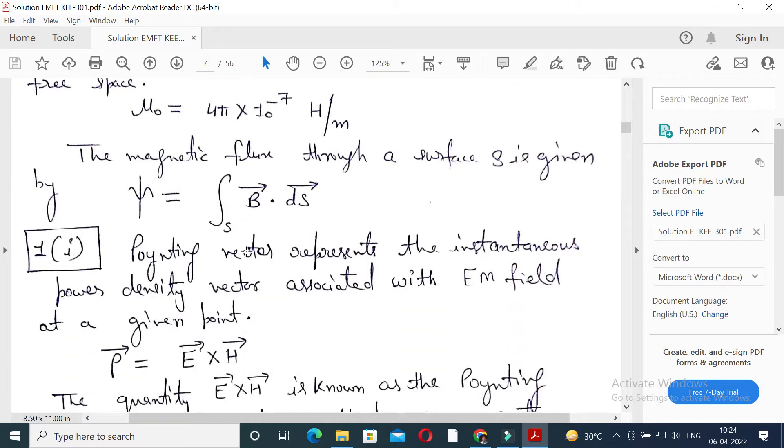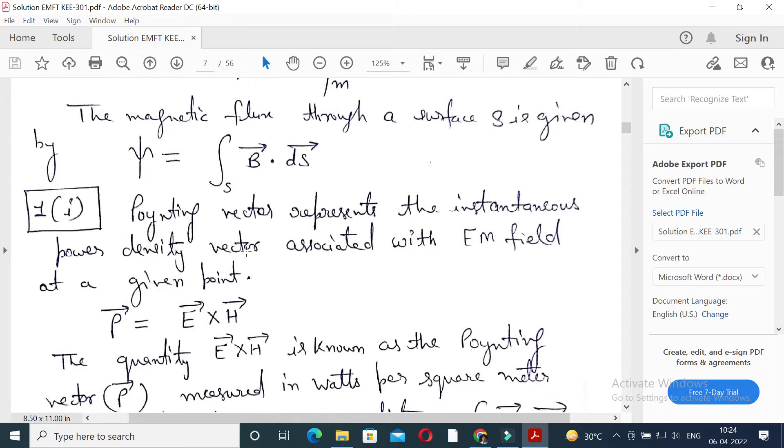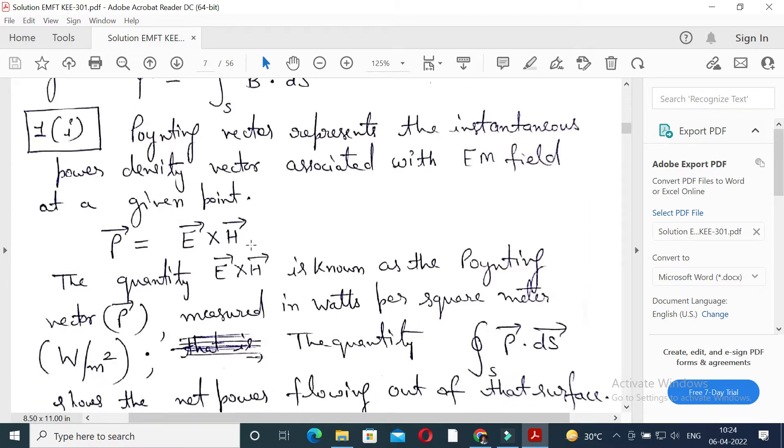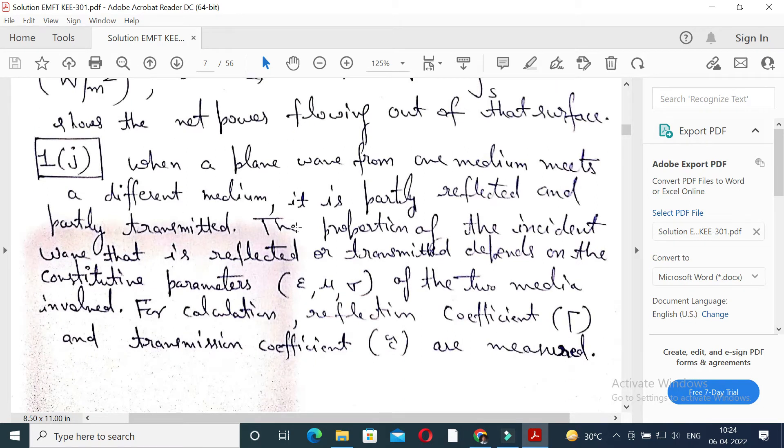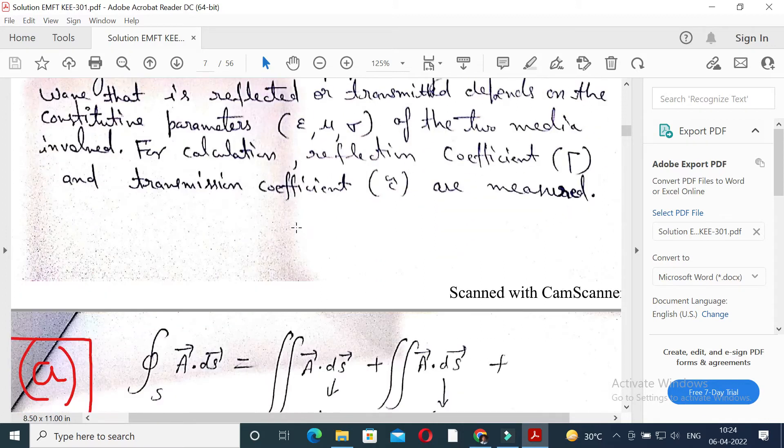What is pointing vector? Pointing vector represents the instantaneous power intensity vector associated with electromagnetic field at a given point. It is a cross product of electric field and magnetic field. Unit of pointing vector is W per meter square. First J: reflection at normal incidence.